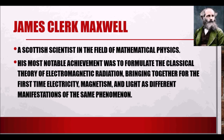Then we have James Clerk Maxwell, a Scottish scientist in mathematical physics. His most notable achievement was formulating the classical theory of electromagnetic radiation, bringing together electricity, magnetism, and light as different manifestations of the same phenomenon. He combined these into electromagnetism through his five Maxwell's equations of electromagnetism, from which the relationship between electricity and magnetism can be proven. These equations are commonly studied in electrical engineering courses, though they are purely mathematical physics.